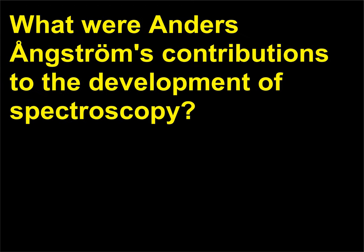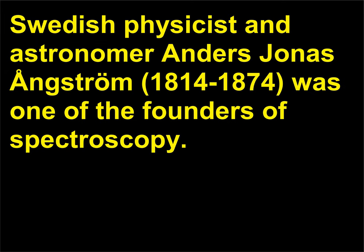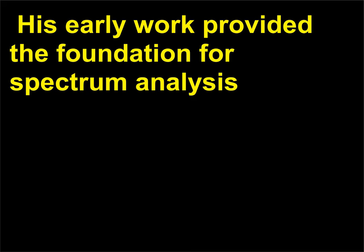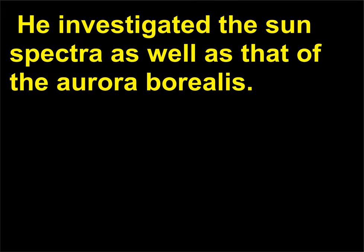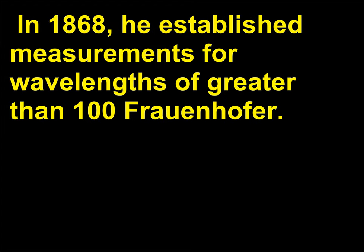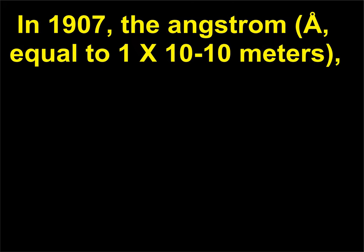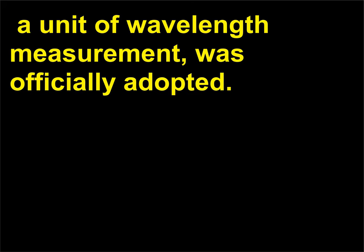What were Anders Ångström's contributions to the development of spectroscopy? Swedish physicist and astronomer Anders Jonas Ångström (1814–1874) was one of the founders of spectroscopy. His early work provided the foundation for spectrum analysis — the analysis of the ranges of electromagnetic radiation emitted or absorbed. He investigated the sun's spectra as well as that of the aurora borealis. In 1868, he established measurements for wavelengths of greater than 100 Fraunhofer lines. In 1907, the angstrom (Å), equal to 1×10⁻¹⁰ meters, a unit of wavelength measurement, was officially adopted.